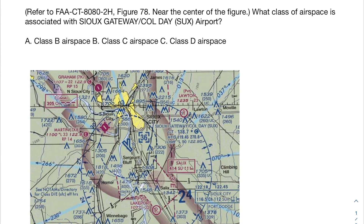This first problem says: what class of airspace is associated with Sioux Gateway, Cold Day, and then in parentheses — one of the best airport codes I've seen — SOX Airport. We have three answer options, but we're going to skip over them so that we can come to the answer organically and then compare them to see if it matches.